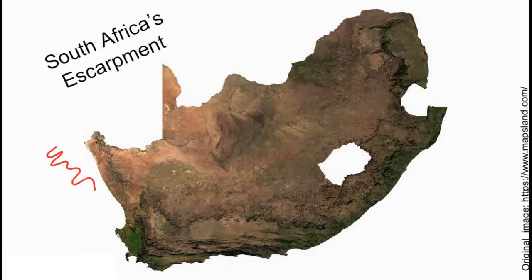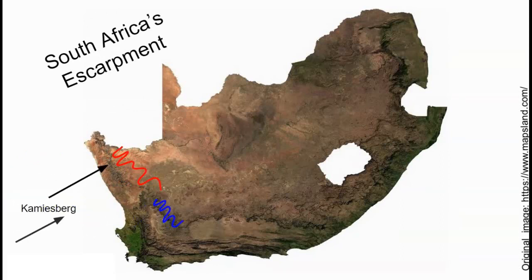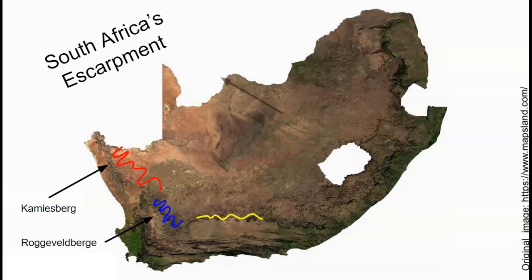In the northwest near the Richtersveld we have the Kamisberg. Inland from the Cederberg, the Rocheveldt Berge. The northern border of the Great Karoo area is the Nuweveld mountains, and east of that we have the Sederberg.